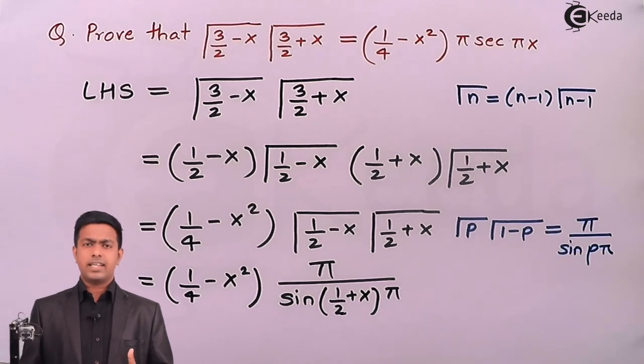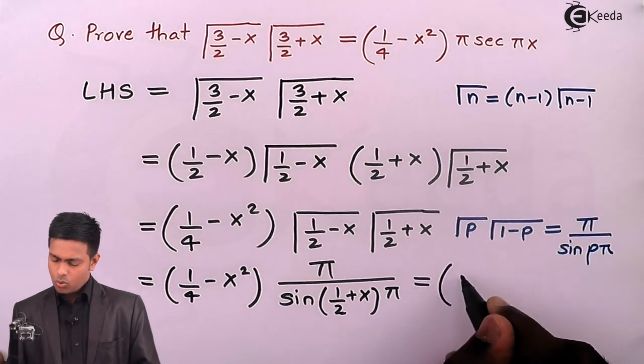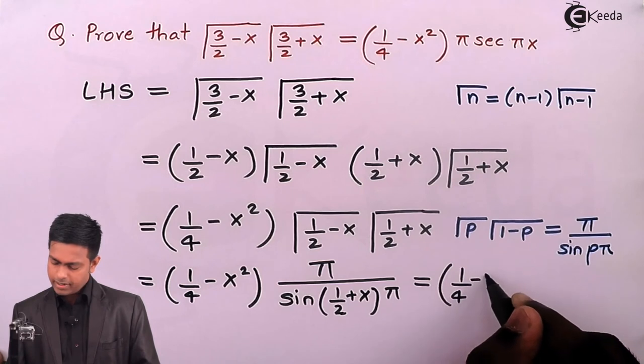We know that sin(π/2 + θ) is cos θ, so that will become cos πx. So here I can say it is (1/4 - x²) times π/cos πx.